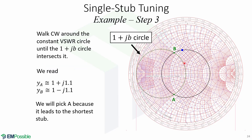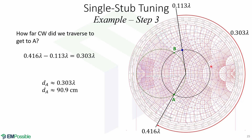Now we identify the 1 + jB circle on the admittance chart. From the initial admittance, we will walk clockwise around the constant VSWR circle until the 1 + jB circle intersects it. If we keep walking, we will have two intersections — one at point A and another at point B. We will pick point A because it leads to the shortest stub. From walking from the admittance point to point A, we need to know how far clockwise we traversed. We start here at 0.113 wavelengths and move all the way to 0.416 wavelengths, meaning we traverse a distance of 0.303 wavelengths, which in centimeters is 90.9 centimeters.